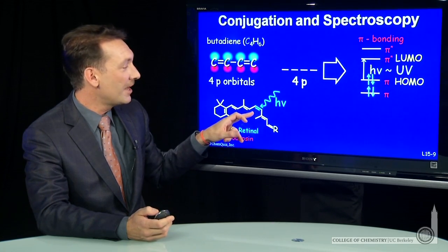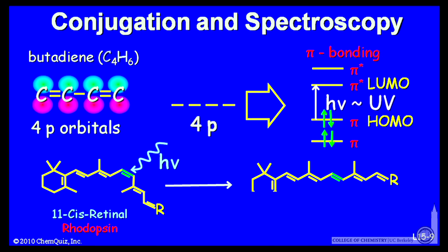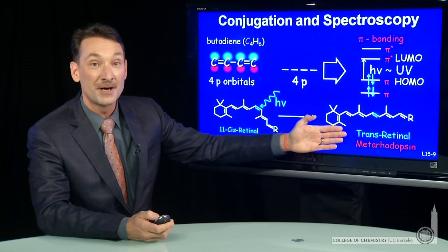And it allows this bond to isomerize, to rotate, and form this isomer of rhodopsin. So transretinol, or metarhodopsin. Those are two names for the same compound.